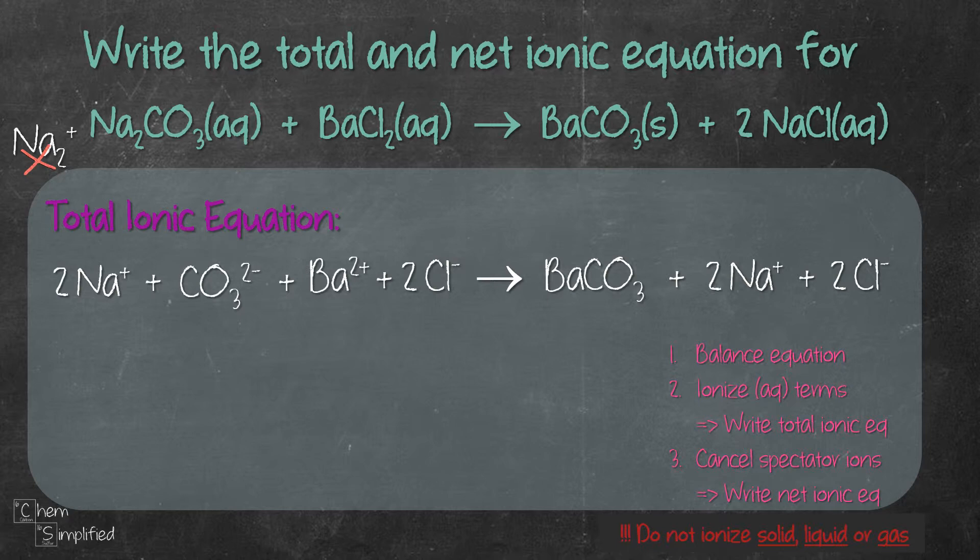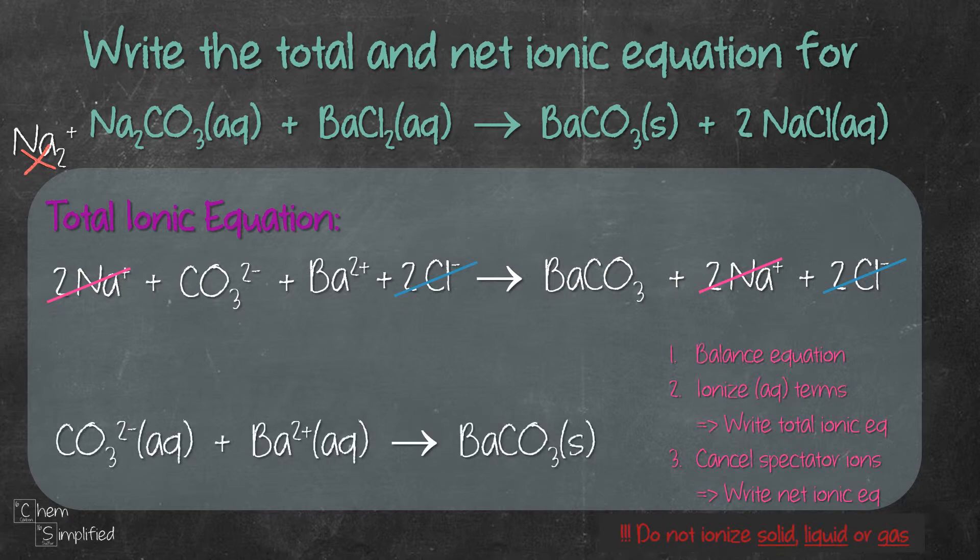So in this case, we have 2 Na+ on both sides of the equation. So we're gonna cancel them out. We also have 2 Cl- on both sides of the equation, so we're gonna cancel them out as well. And now we rewrite the equation and we get CO3 2- plus Ba2+ gives us BaCO3 solid. That's the net ionic equation.